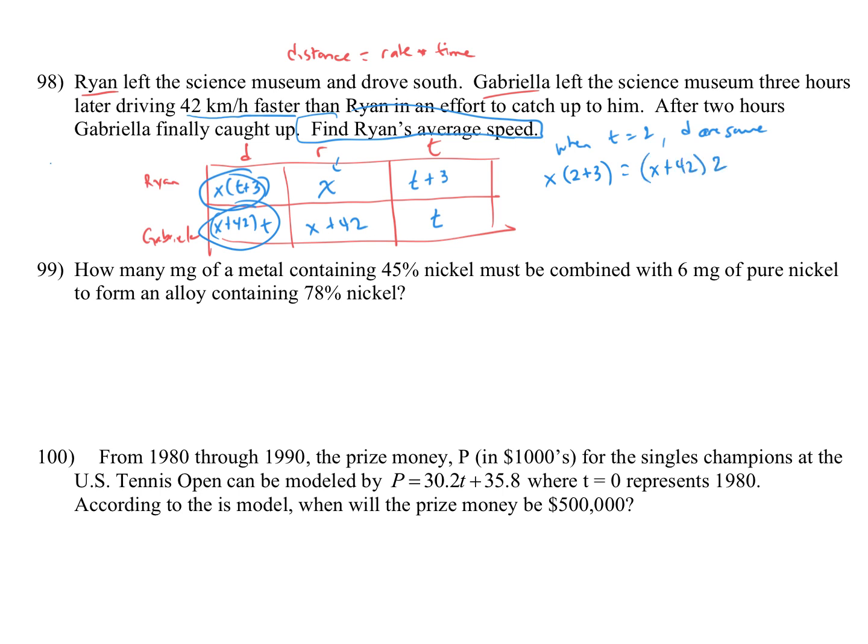Now I have an equation that has only one variable in it and I can solve. The first one is x(2+3) = (x+42)2, which gives 5x = 2x + 84. Solving this: 3x = 84, so x = 16. Wait, it should be x(5) = 2x + 84, so 5x = 2x + 84, 3x = 84, x = 16. Actually working through the calculation carefully, Ryan's average speed is 16 kilometers per hour.